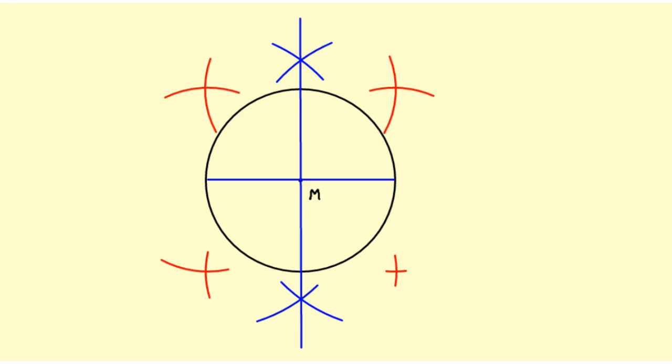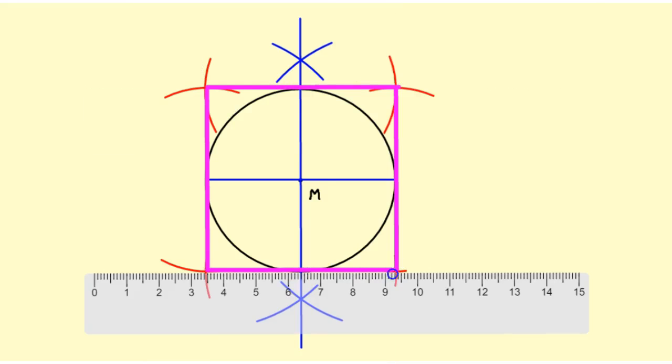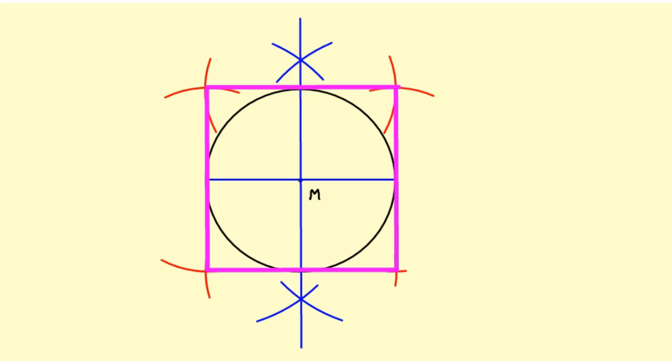Now I just need to take my straight edge and draw my square. This square is circumscribed around the circle.